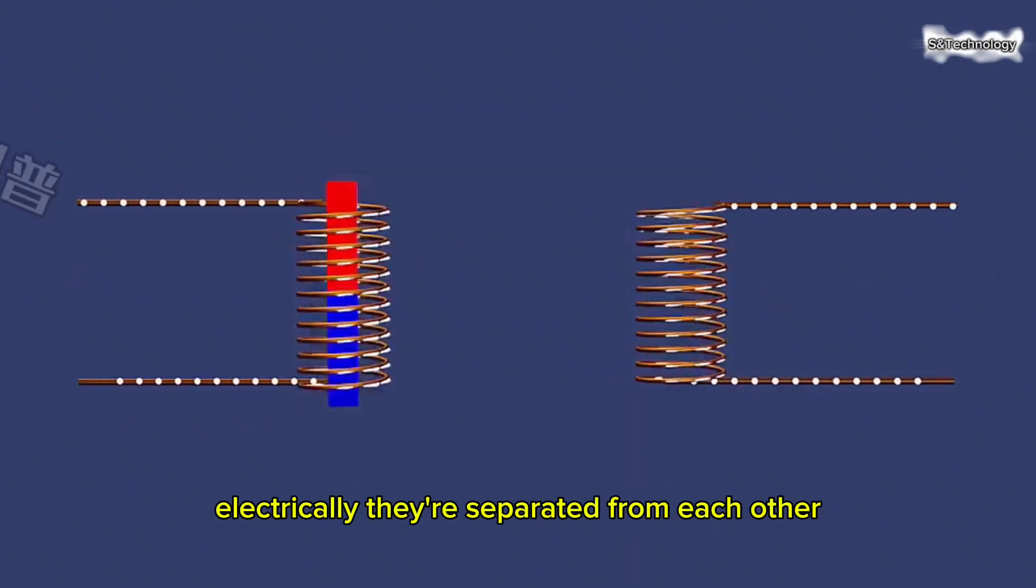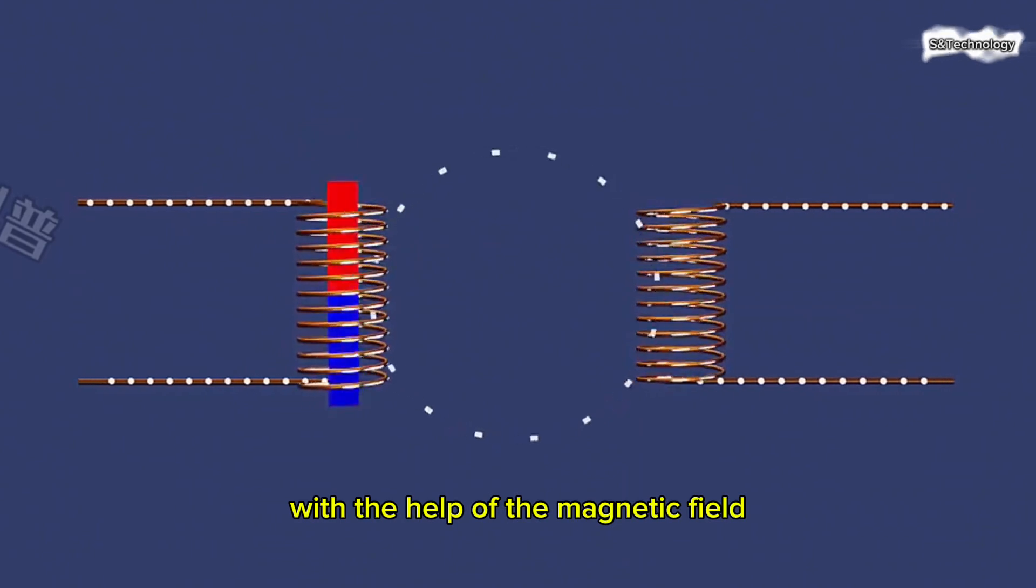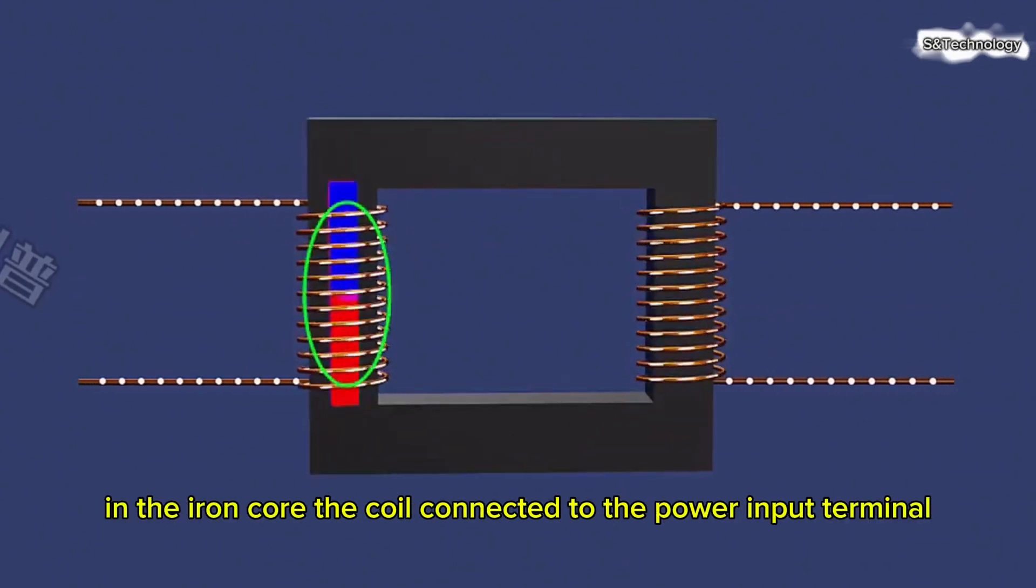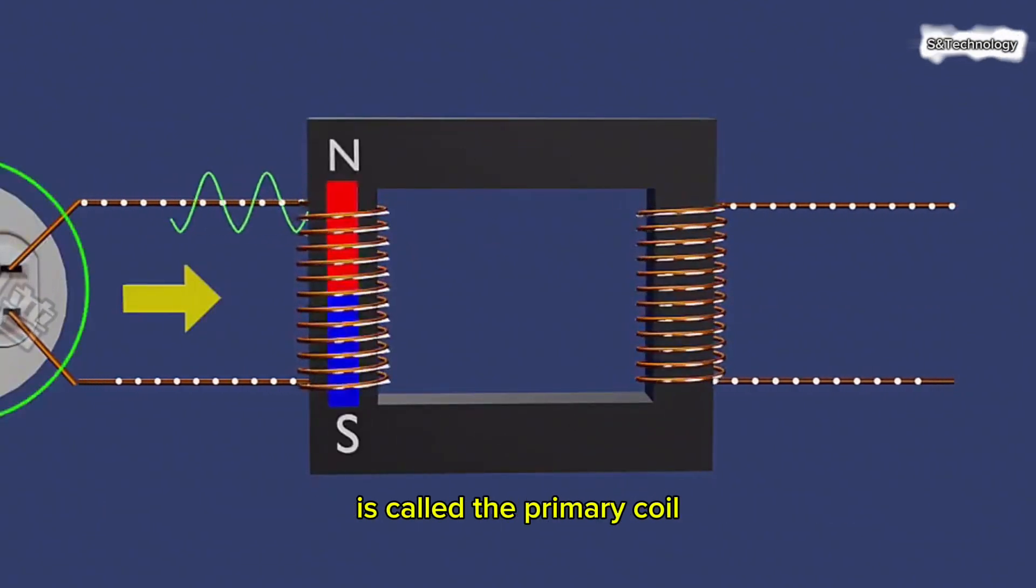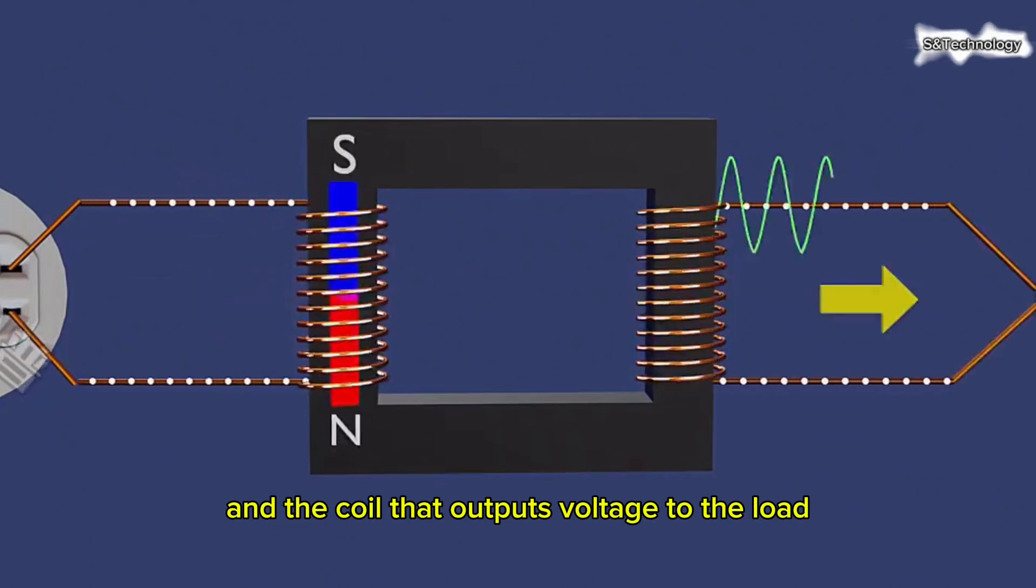Electrically, they are separated from each other, but they are connected to each other with the help of the magnetic field in the iron core. The coil connected to the power input terminal is called the primary coil, and the coil that outputs voltage to the load is called the secondary coil.